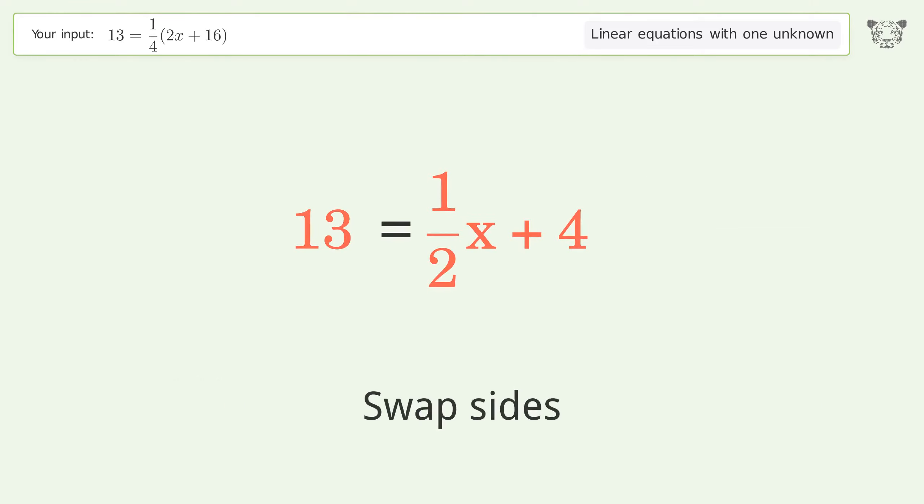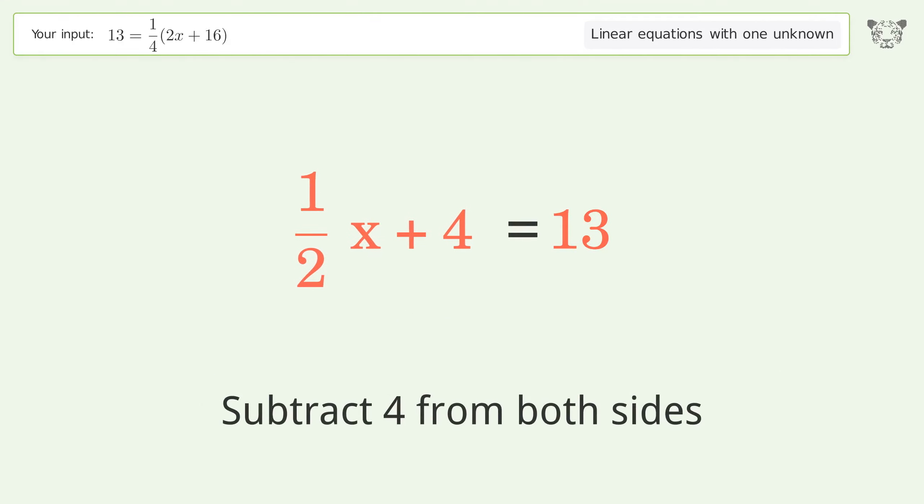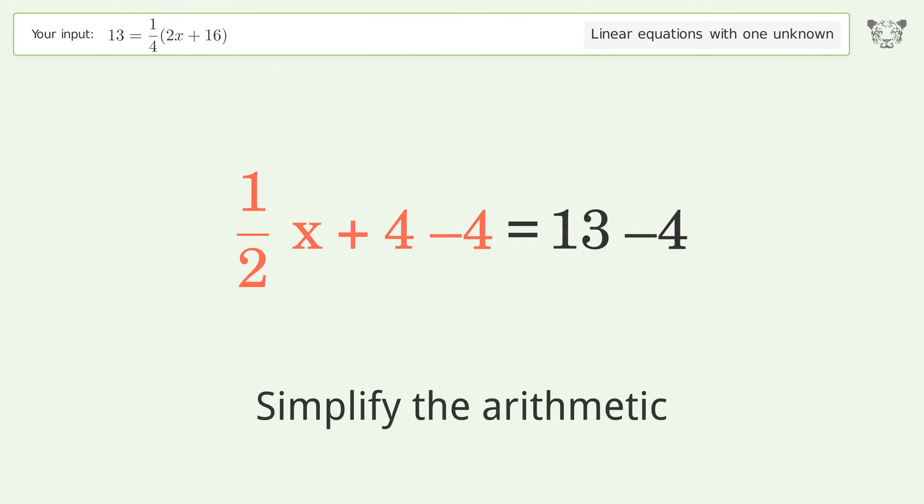Swap sides. Group all constants on the right side of the equation. Subtract 4 from both sides. Simplify the arithmetic.